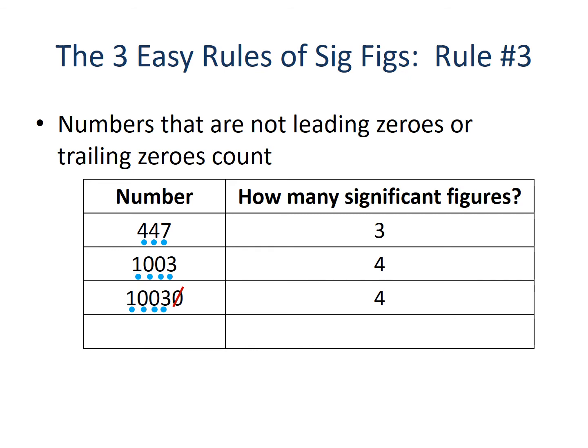If we tweak the example and make it 10038, it becomes very simple to apply rule number three. Now we have no leading zeros nor trailing zeros, which means every single one of these numbers becomes important when determining significant figures. In this example, this number has five significant figures.